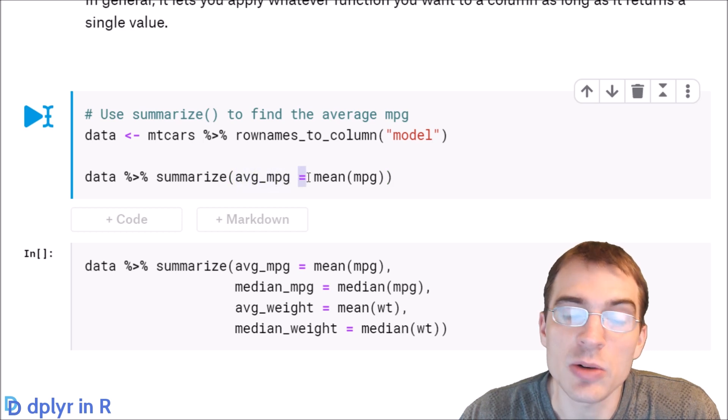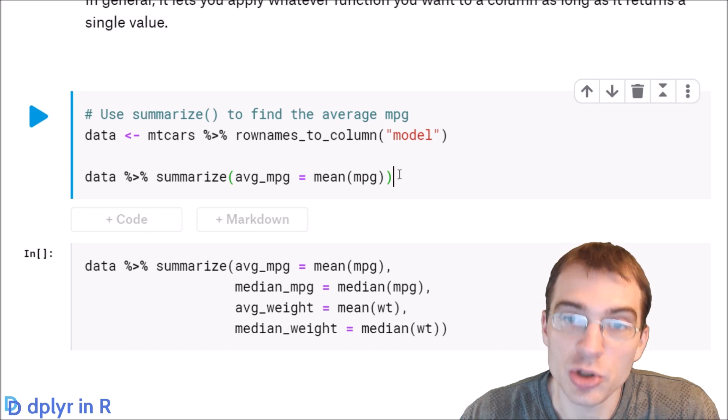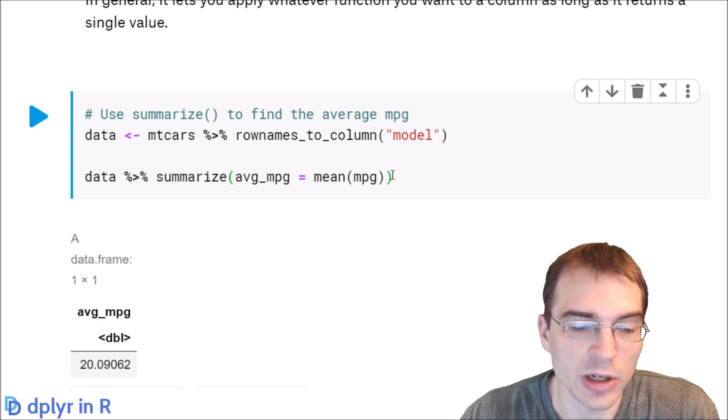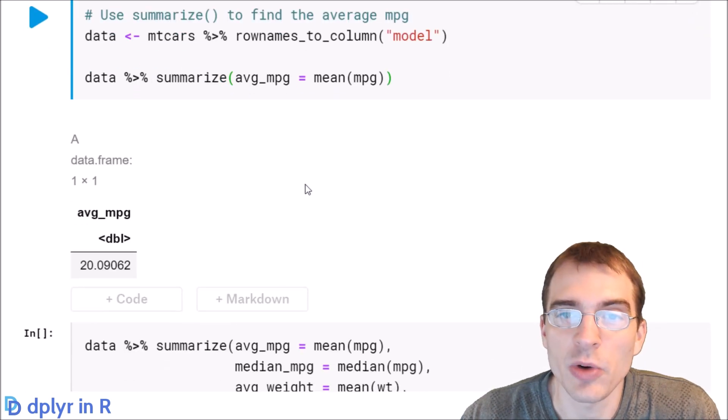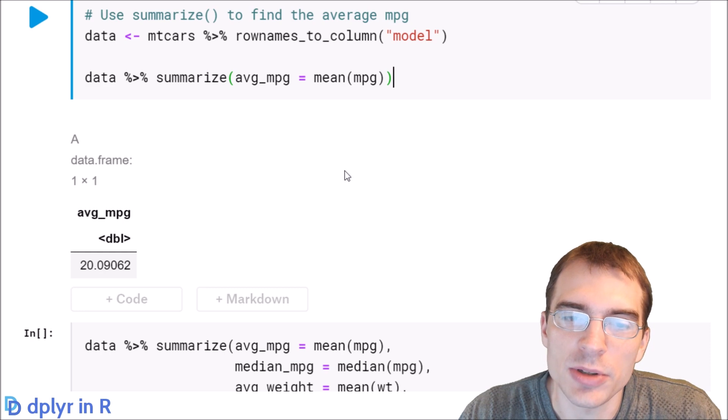And then you set it equal to whatever function call you want to run. So in this case, we just want to take the average or mean of the MPG column. And what that's going to do when we run it is create a new data frame that's, in this case, only a one-by-one data frame because we only asked for a single summary value.